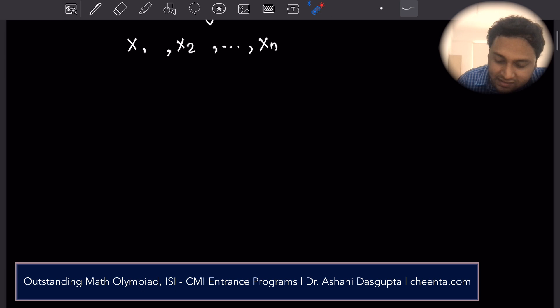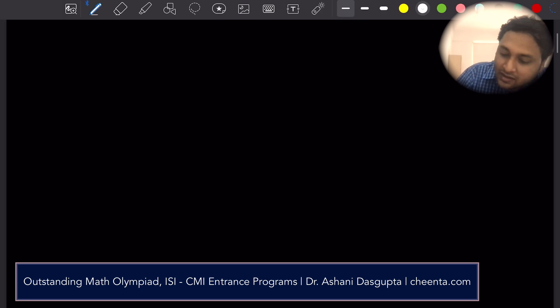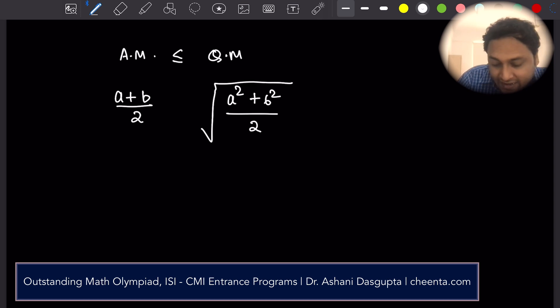Before we do this problem, let me explain something called the arithmetic mean and the quadratic mean inequality. The arithmetic mean is simply the average of the numbers. So let's say A and B are two non-negative numbers. Then A plus B by 2 is the average or the arithmetic mean of these two numbers. What is the quadratic mean? The quadratic mean is you square the two things, divide it by 2, and take the square root of the entire thing. This is called the quadratic mean.